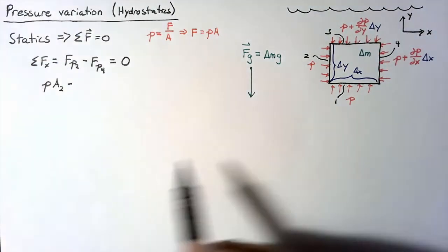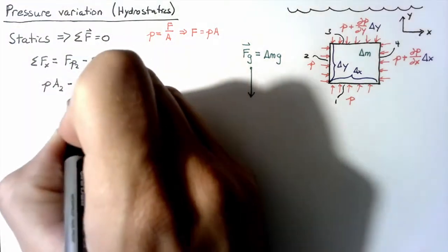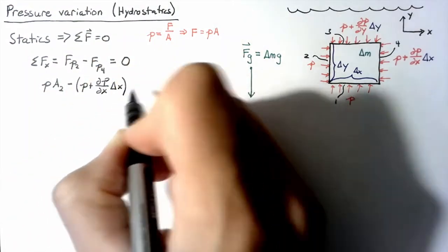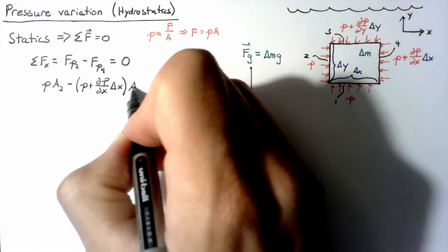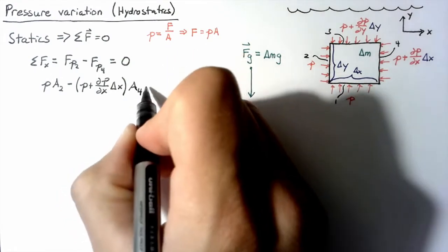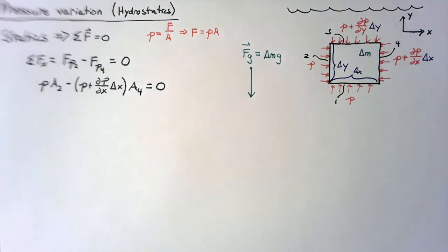And then the pressure on face 4 was this P plus dp dx delta x, and that altogether is going to be multiplied by the area of face 4. And again, that's all equal to 0.